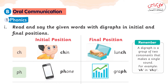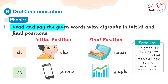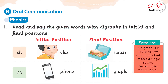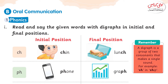Oral Communication. Phonics: Say the names of the given pictures and match them with their correct digraph. First of all, let me remind you what a digraph is. A digraph is a group of two consonants that make a single sound.